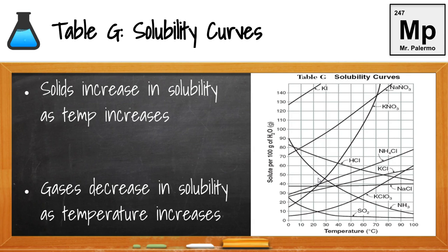Now let's look at Table G in our reference table. This is a table of solubility curves, showing you that at various temperatures how much solute — whatever the line is representing — can be dissolved in 100 grams of water. Most of the lines are increasing; these represent solids, because as you increase temperature, solid solubility increases. We also have three lines — HCl, NH3, and SO2 — which represent gases. Gases decrease in solubility as temperature increases because as temperature rises, they move faster and further apart, making it harder for intermolecular forces to come into play.